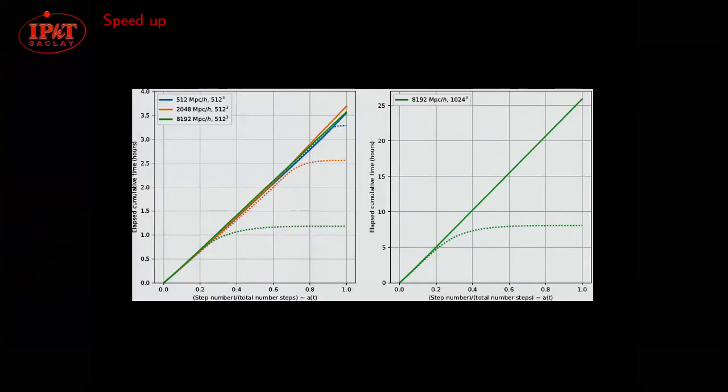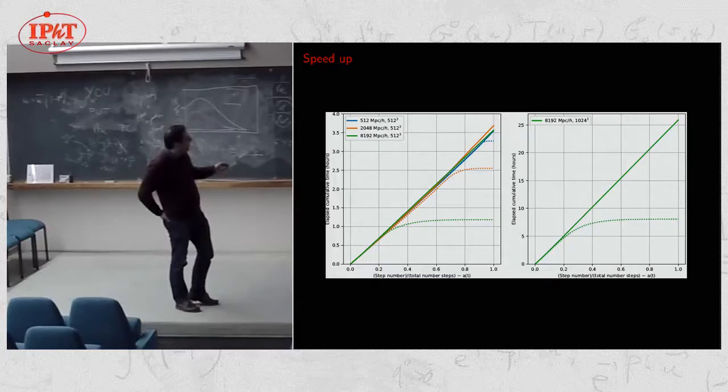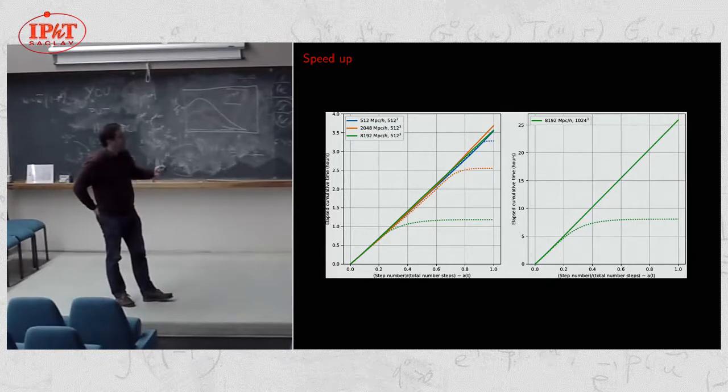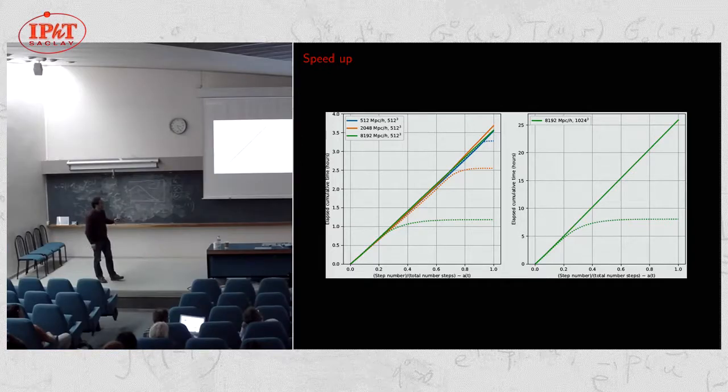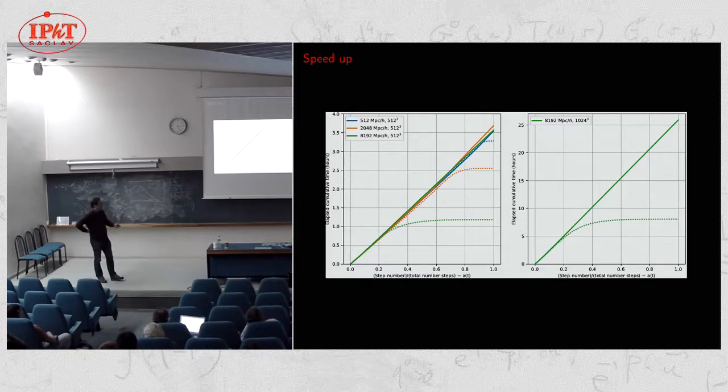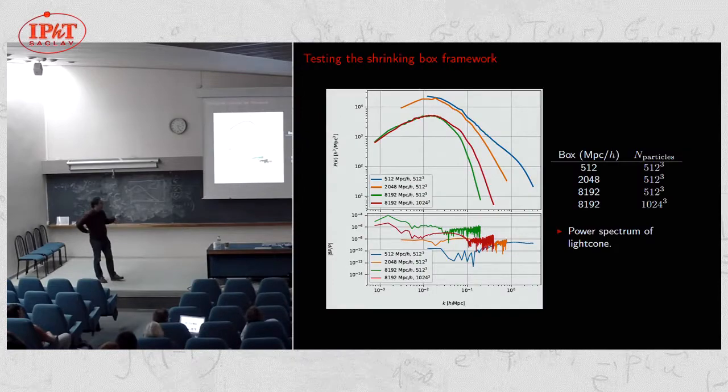But this is the time the simulation took to run. So I have the high resolution simulations here and low resolution here. So if you use the standard algorithm, you run in one day, 25 hours. This is expansion factor and this is the time, elapsed time, cumulative time, per time step. So the total time of the simulation was 25 hours. And if you shrink the box with time, you simulate only the light cone, you get this curve. So you see that there is a speed up of more than a factor of 3. So that's it. It runs faster. And I get exactly the same accuracy, exactly the same power spectrum.